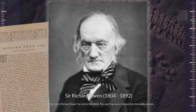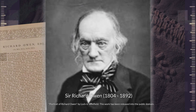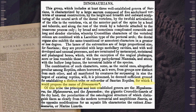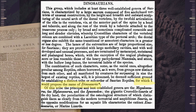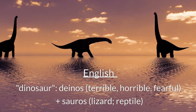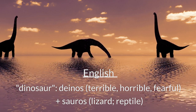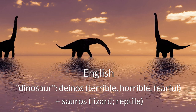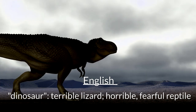The term dinosaur was first used in a research paper written by British scientist Sir Richard Owen in 1842. Owen coined the term dinosauria in his paper titled A Report on British Fossil Reptiles to describe a new group of extinct reptiles he had identified using fossils from across England. The names dinosaur and dinosauria are derived from the Greek words dinos, meaning terrible, horrible, or fearful, and sauros, meaning lizard or the order of reptiles. Thus, dinosaur translates to terrible lizard or horrible, fearful reptile.